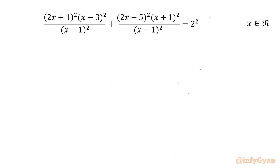Welcome to InfiGyaan my dear friends. Today in this video we are going to solve one very interesting rational equation problem. It is (2x+1)²(x-3)² over (x-1)² plus (2x-5)²(x+1)² over (x-1)² equal to 2², and we have to find out all real solutions.